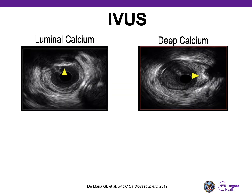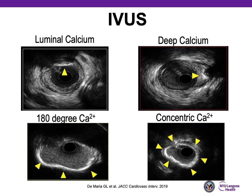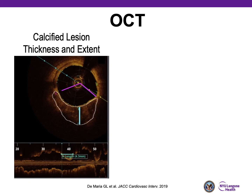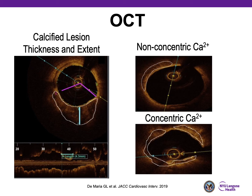Here are picture examples of calcified lesions by IVUS — an example of luminal calcium and an example of deep wall calcium. IVUS is better at differentiating between the two compared to OCT. Here's an example of a 180-degree arc of calcium and concentric calcium on IVUS. Looking at OCT, you can get a sense of the calcified lesion itself — both the thickness and the extent. On IVUS, you would need an automated pullback to better assess calcific length.